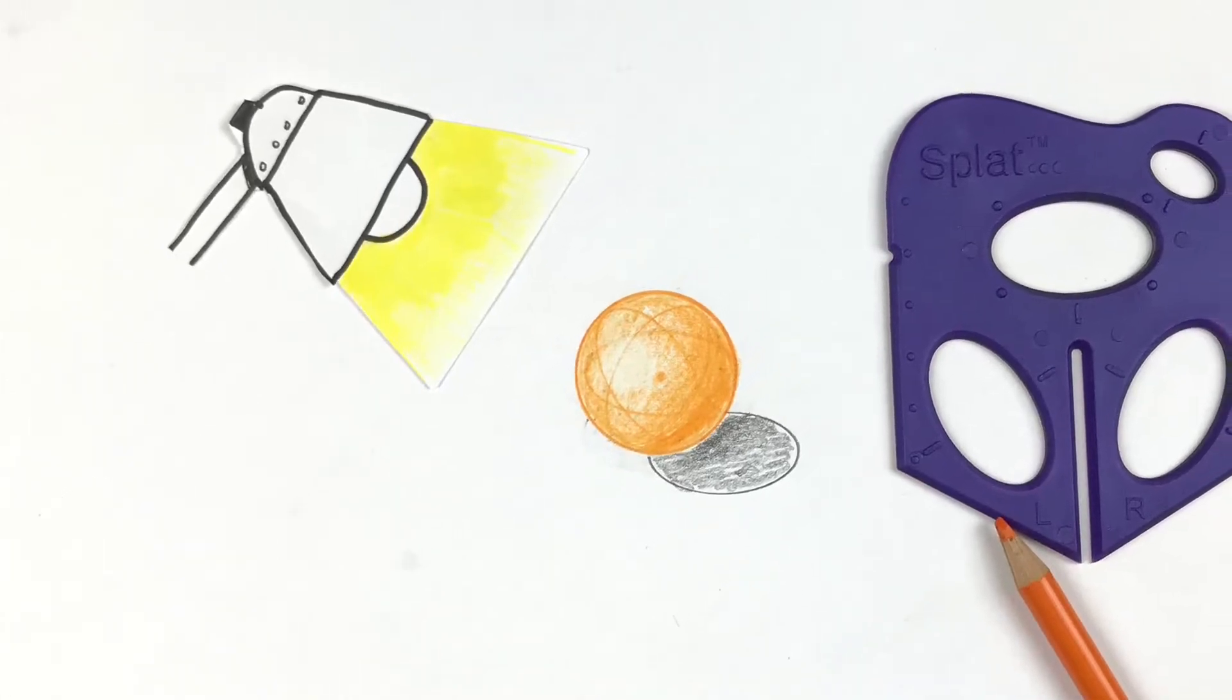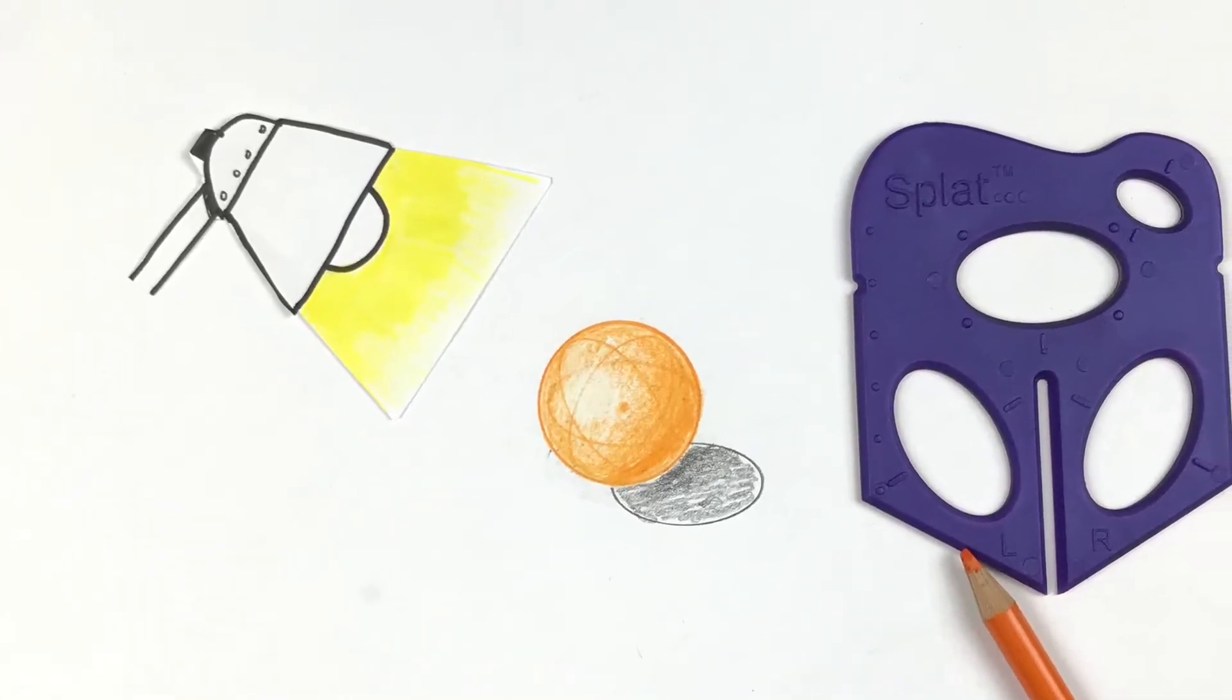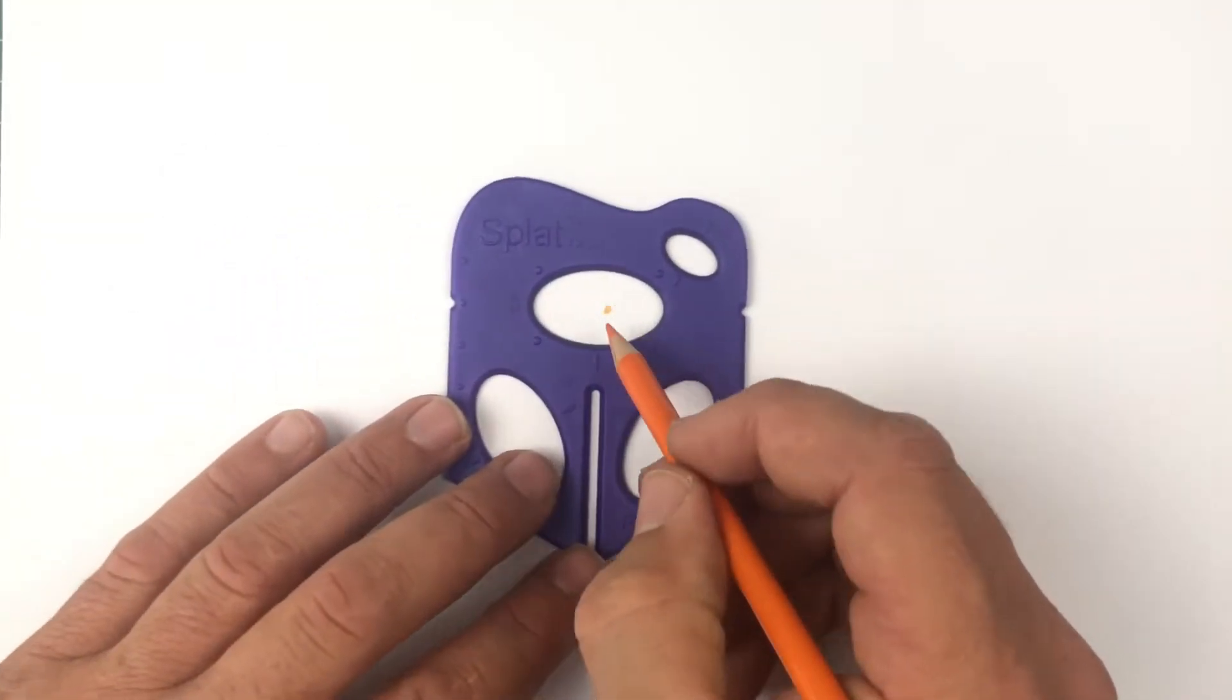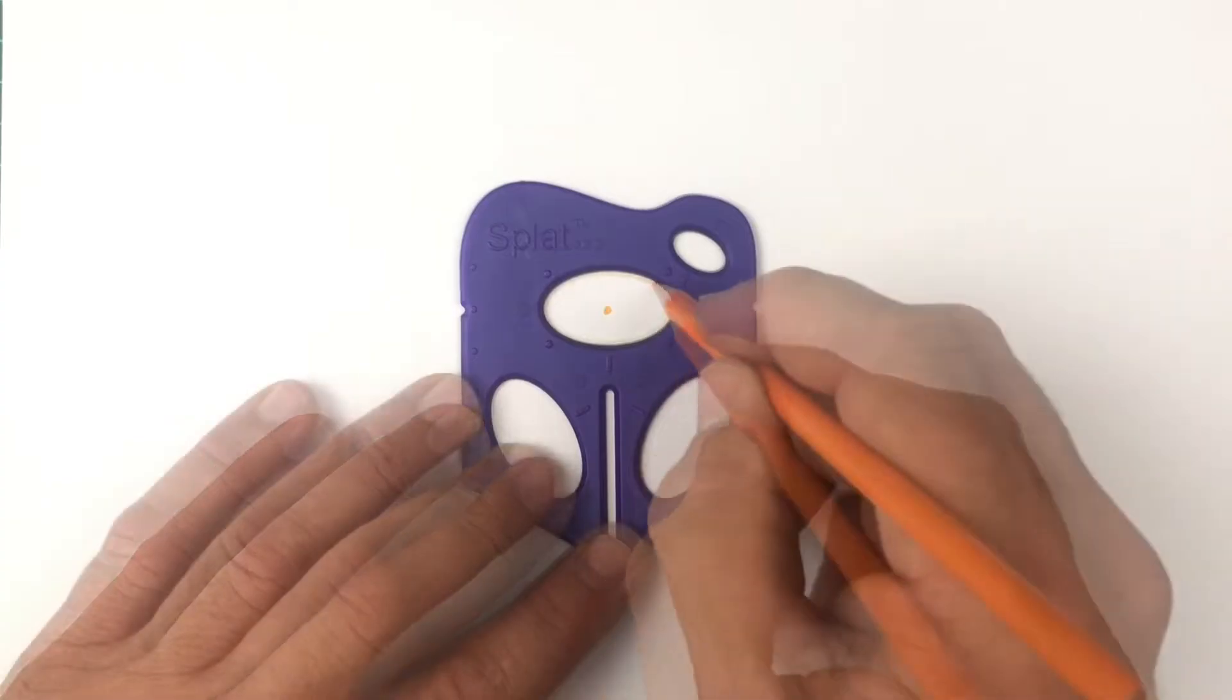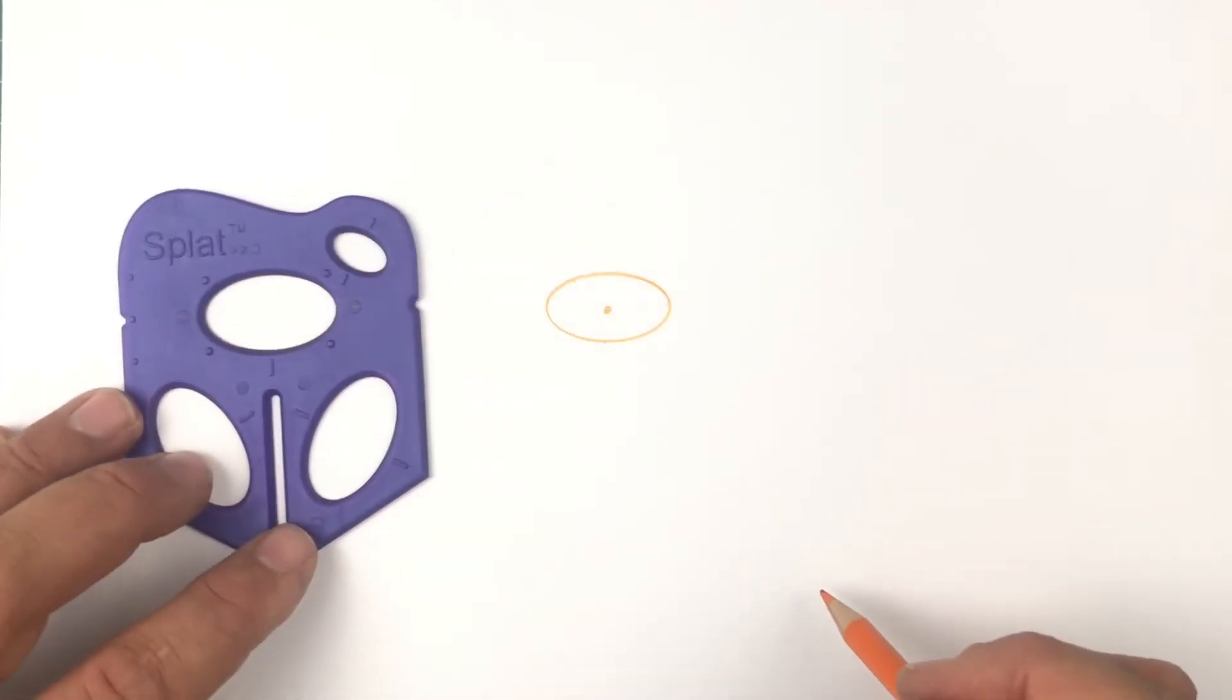Using the splat is a great way to learn about how to draw and render spheres. Come up with a starting point on your page and center that ellipse. Then draw one ellipse.